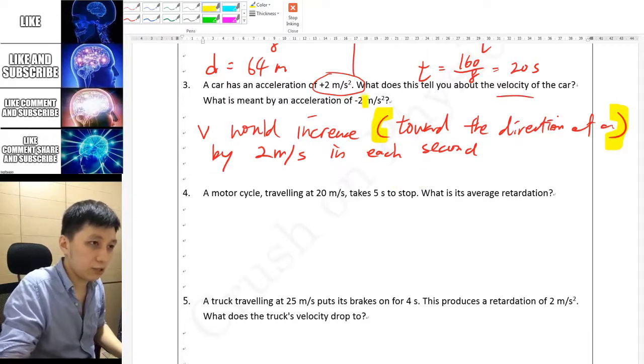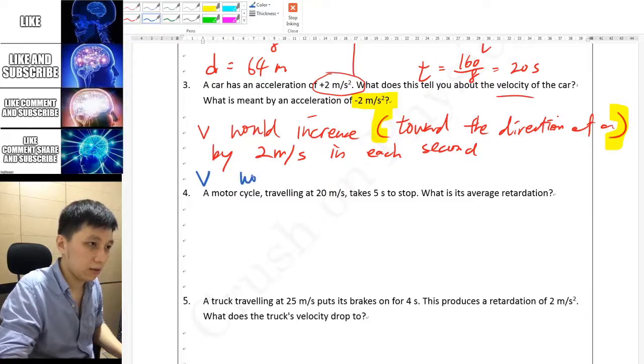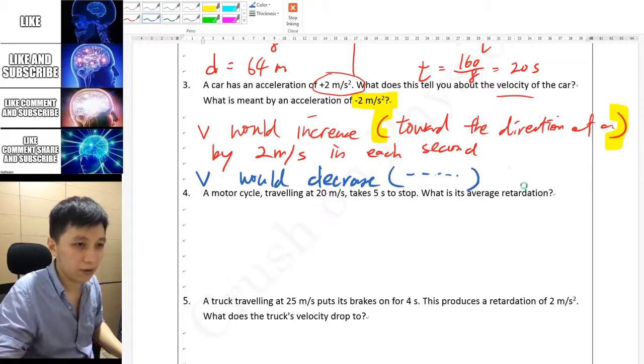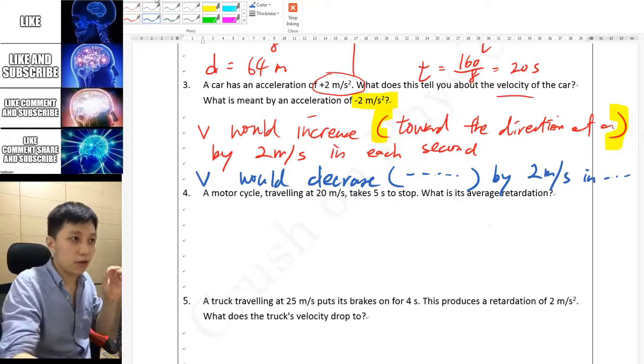Similarly, if they ask you about negative 2, then it would simply be the same thing. V would decrease towards the direction of acceleration by 2 meters per second in each second. The main difference is simply decrease when you have negative.